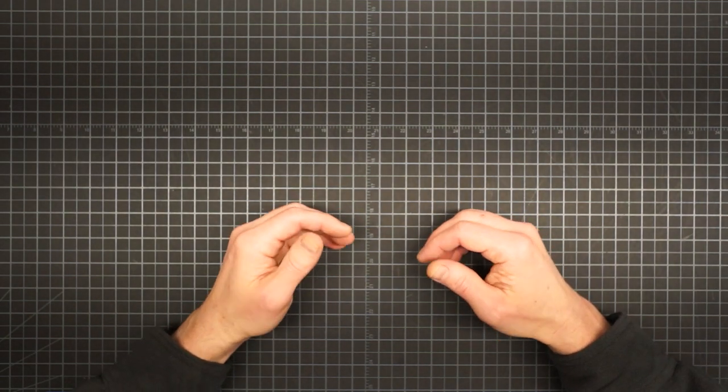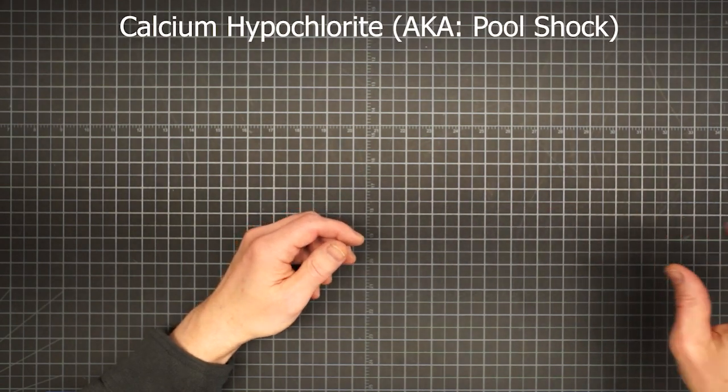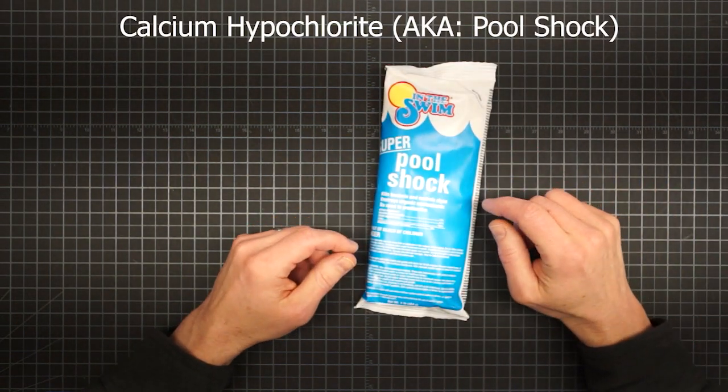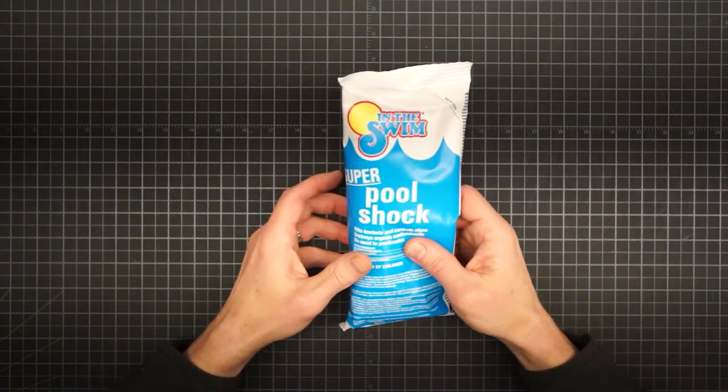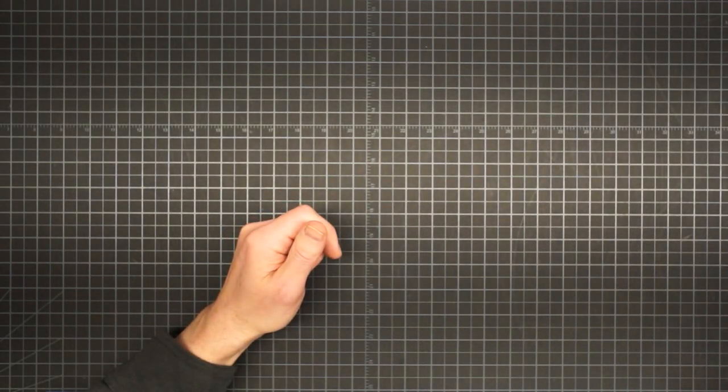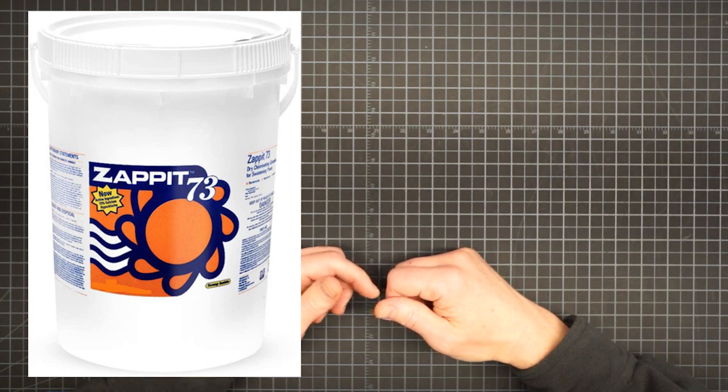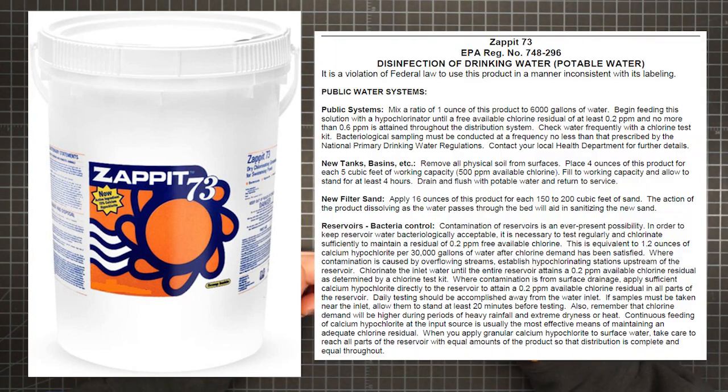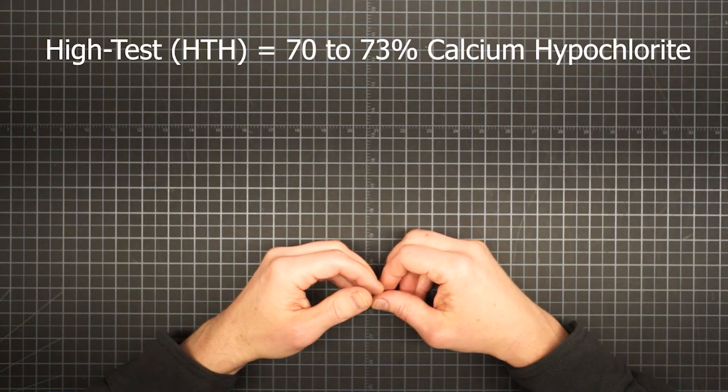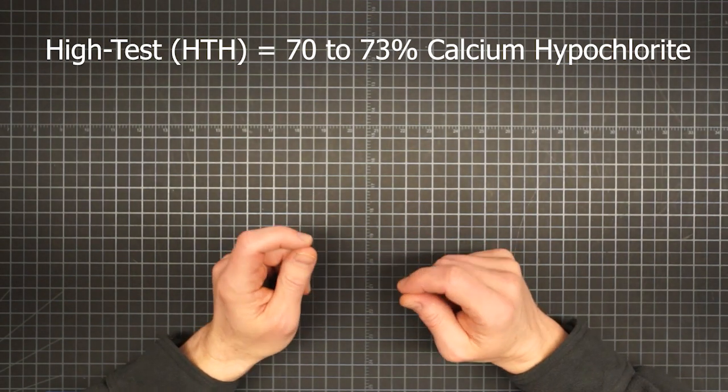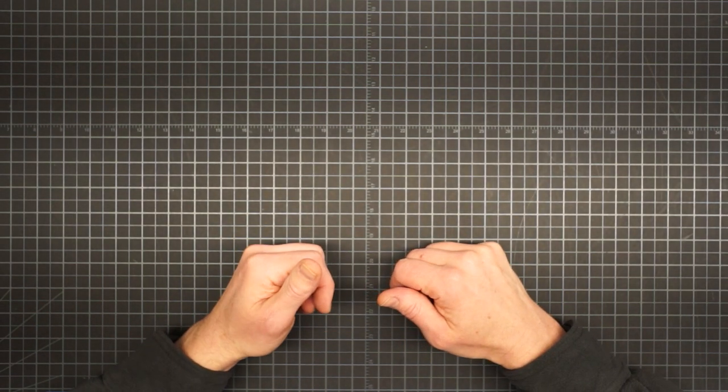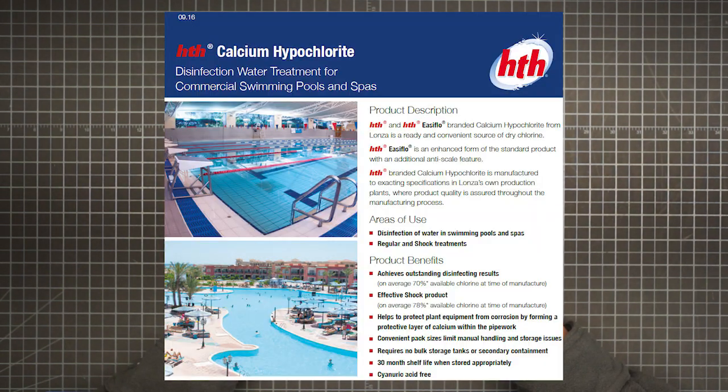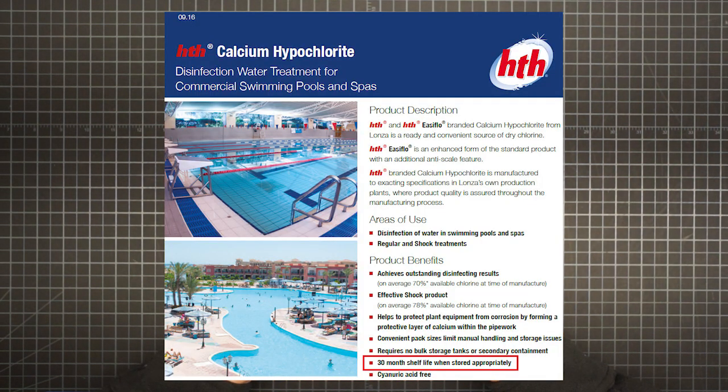There are other label ingredients that can provide you with the same free chlorine, and one such as calcium hypochlorite, better known as pool shock. Different name, but it's really just another salt of hypochlorous acid. Dissolve the granules in water and you'll get free chlorine just the same. Zappet 73 is a brand of calcium hypochlorite sold for pool treatment, but they publish a service bulletin with several pages of instructions for use in all kinds of drinking water facilities. So when shopping, look for high test calcium hypochlorite in the 70 to 73% range with no additives for pH or algae control. An advantage to this dry source of free chlorine is an extended shelf life. According to HTH brand, it should last 30 months when stored appropriately.